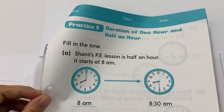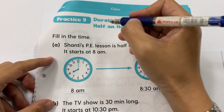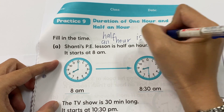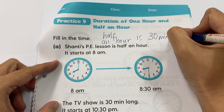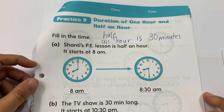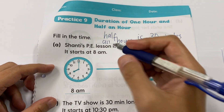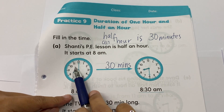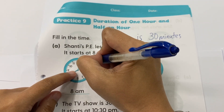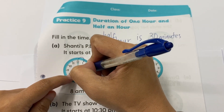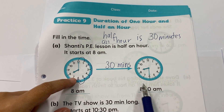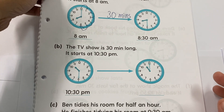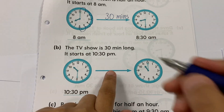Let's move on to the next part — half an hour. Half an hour means 30 minutes. Shanty's P.E. lesson is half an hour, which is 30 minutes. It starts at 8, so half an hour means moving 5, 10, 15, 20, 25, 30 — stop there. So it will end at 8:30 a.m.